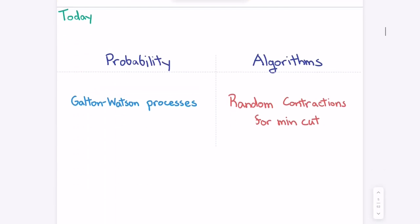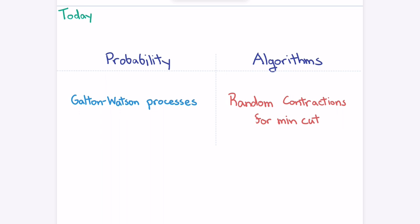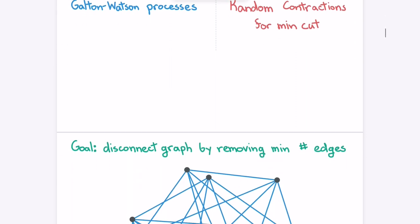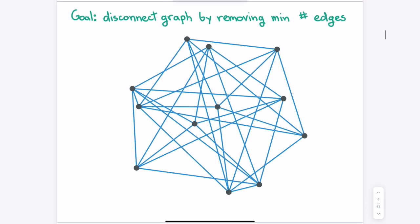Today we'll do an algorithm for minimum cut, which is a problem you've probably seen before — a standard graph algorithm. Possibly we'll also talk about the Galton-Watson process. Here's a graph with about twelve nodes. Your goal is to find a minimum cut in the graph, meaning you want to delete some edges so that not everyone is connected. What is the minimum cut of this graph?